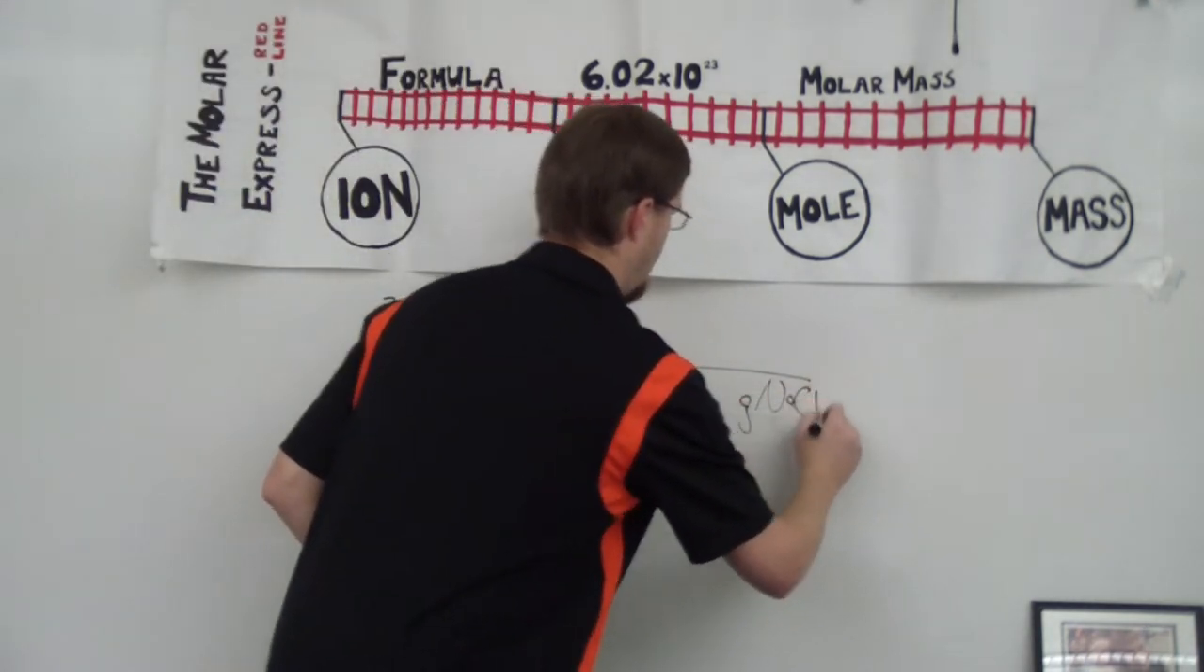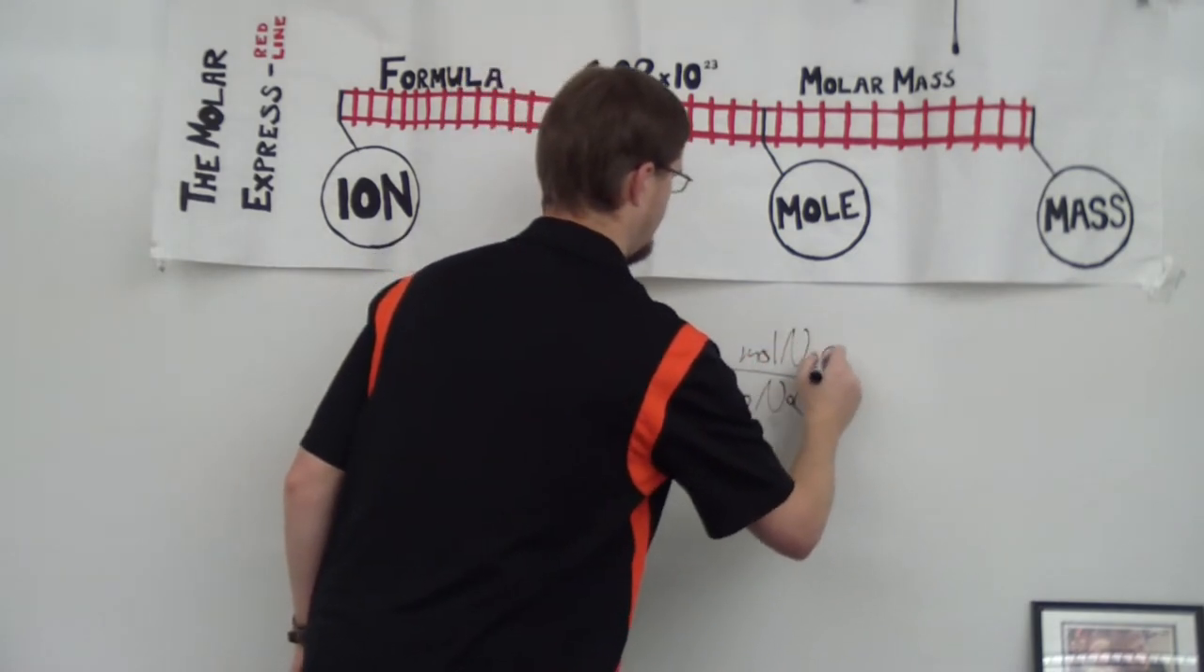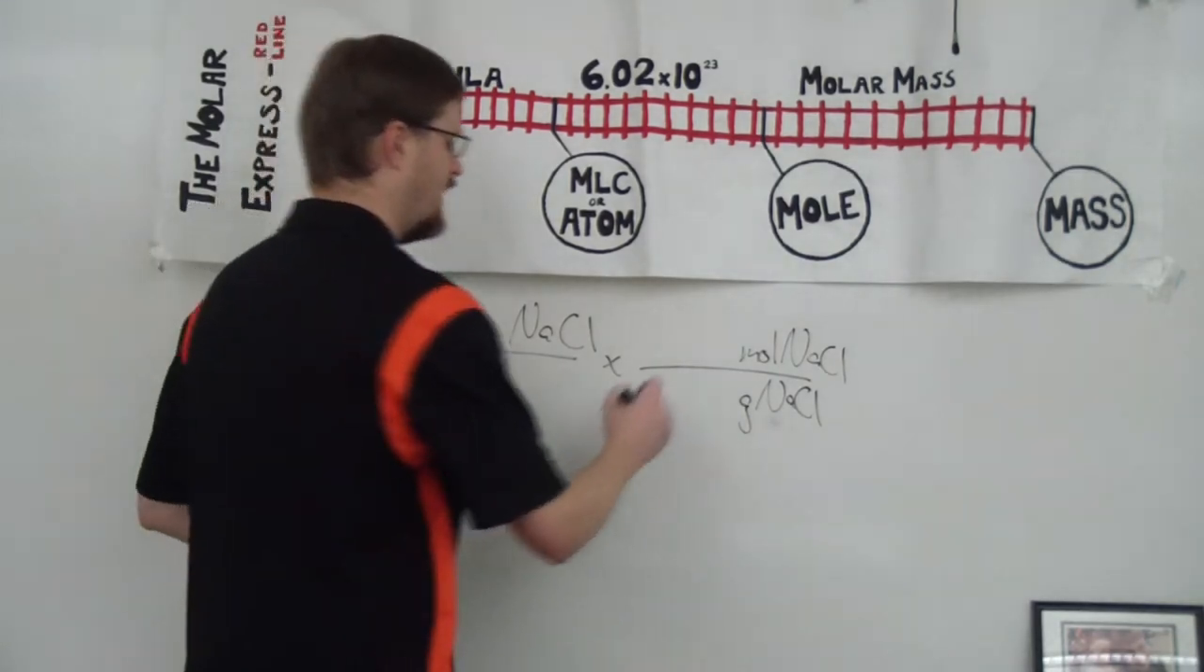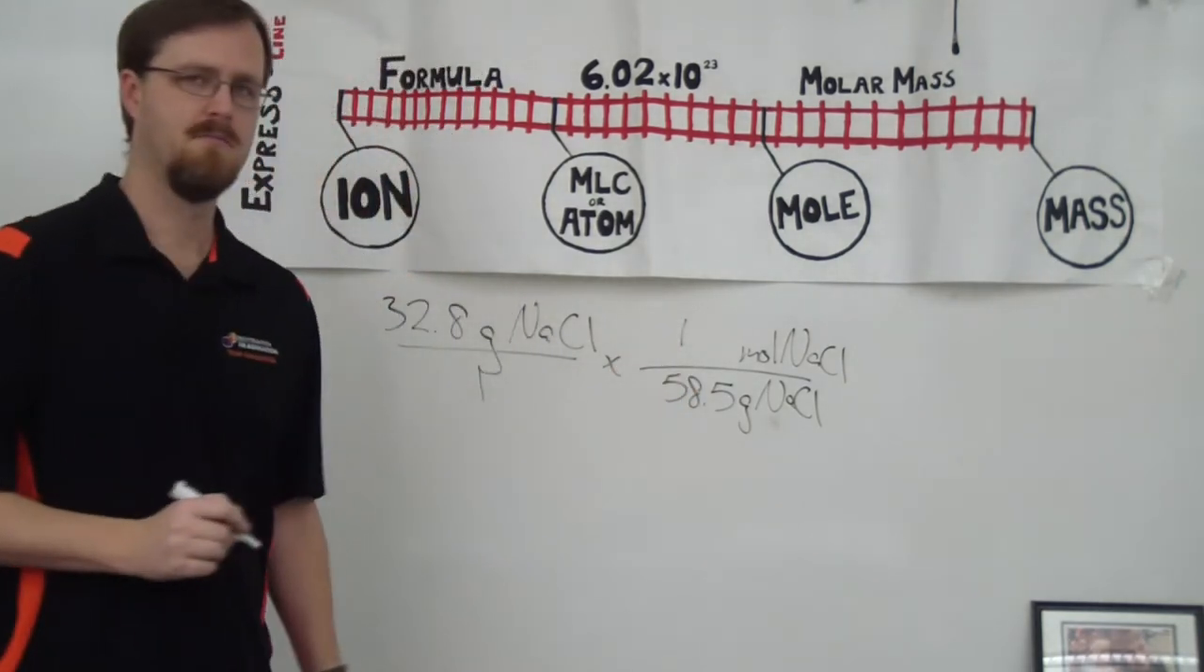Okay, so since grams is on top here, that means grams has to go on the bottom with moles NaCl on top, because that's molar mass. And then we look it up on the periodic table. Alright, so sodium has a mass of 23 grams per mole. Chlorine has a mass of 35.5 grams per mole. You add that together, and we get 58.5 grams for every one mole.